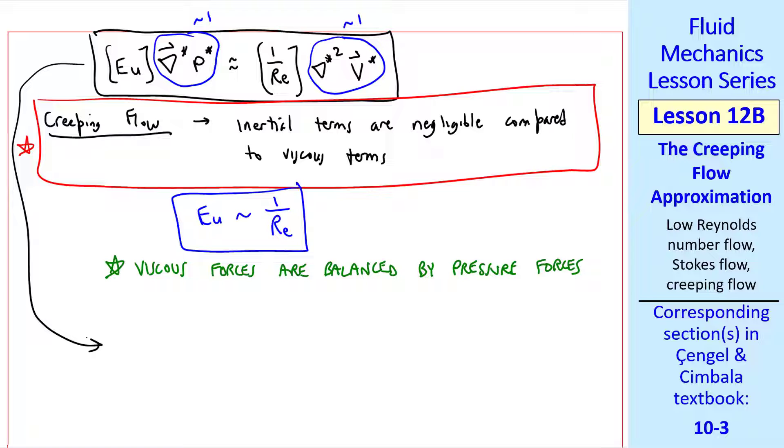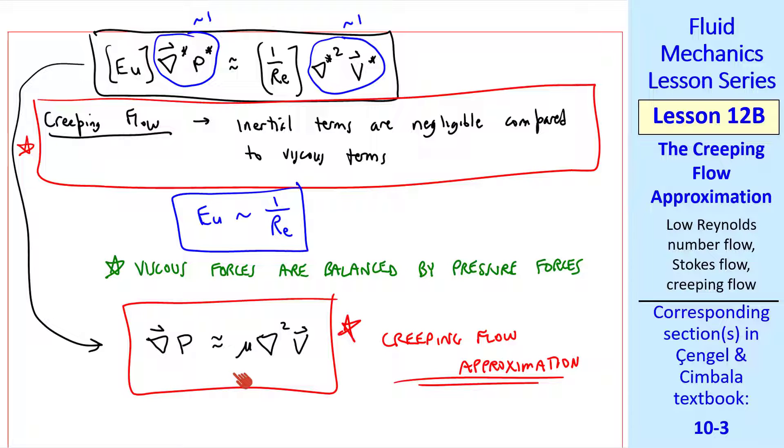If we write this equation dimensionally, we have the gradient of p is approximately mu del squared v. This is the creeping flow approximation. This equation is certainly much simpler than the full Navier-Stokes equation, and therefore easier to solve.